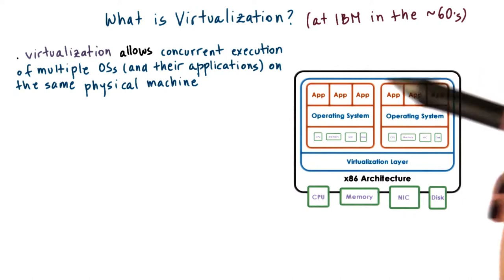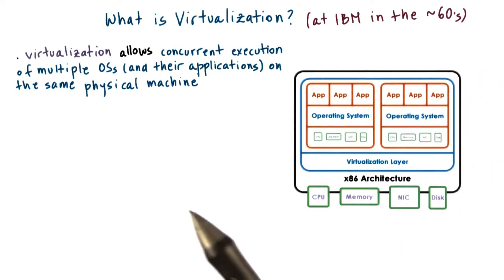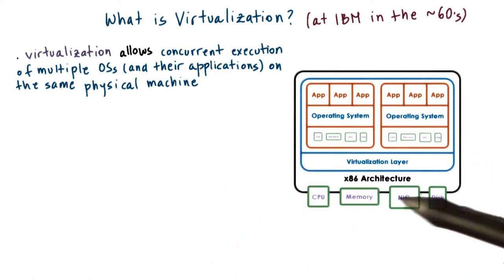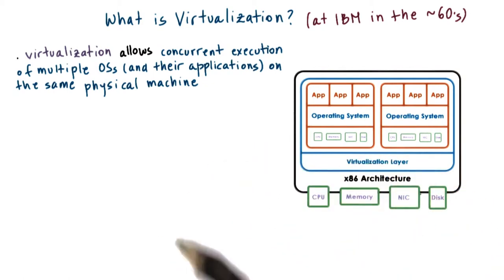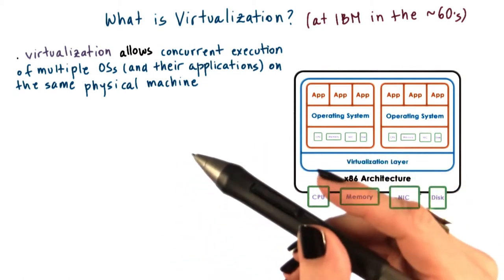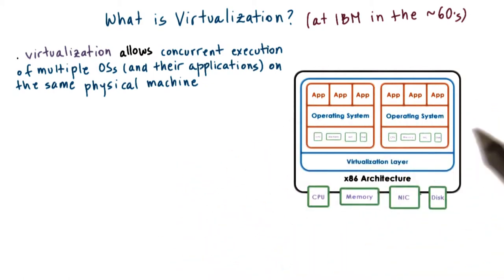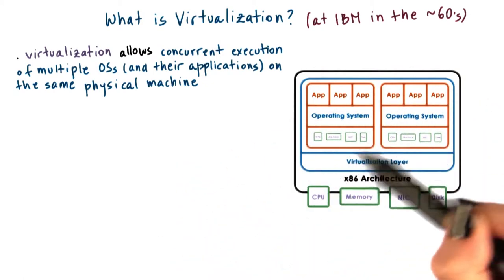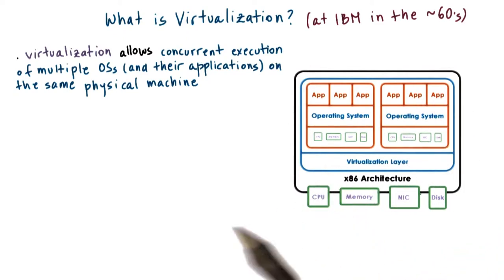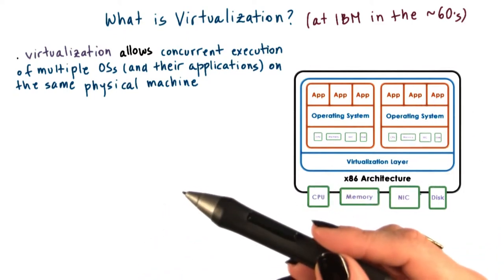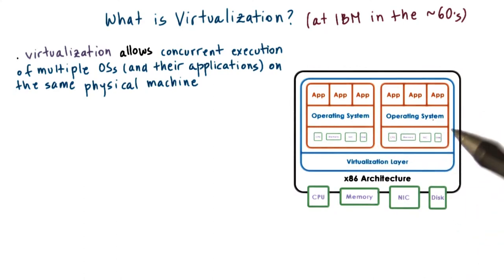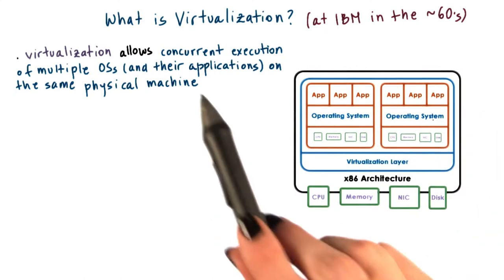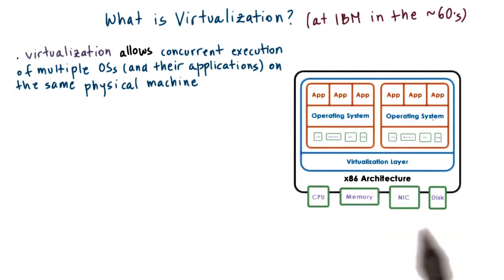In order to concurrently run very diverse workloads on the same physical hardware, without requiring that a single operating system be used for all of the applications for all of the possible purposes, it was necessary to come up with a model where multiple operating systems can concurrently be deployed on the same hardware platform.